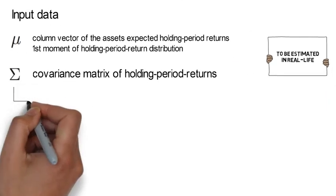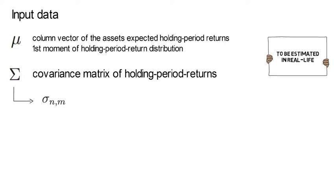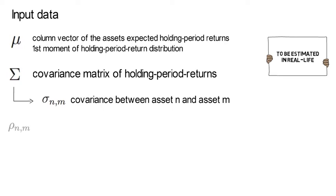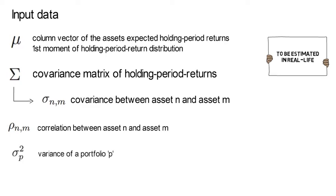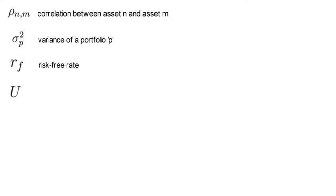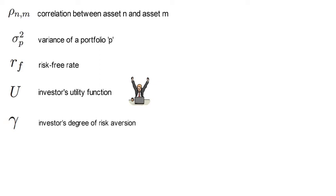An element of Sigma will be denoted as Sigma_NM, which captures the covariance between asset N and asset M. Rho_NM stands for the correlation between asset N and asset M. Sigma squared P denotes the variance of a portfolio P. Rf stands for the risk-free rate. Capital U stands for an investor's utility function and measures how happy the investor feels about his portfolio decision. Gamma stands for the investor's degree of risk aversion, and capital W stands for the investor's wealth.